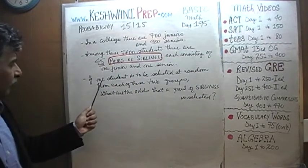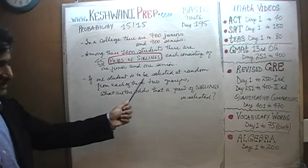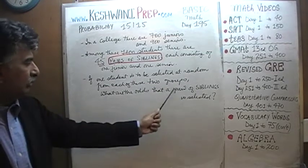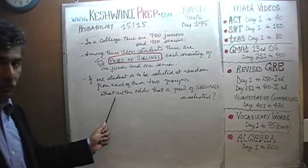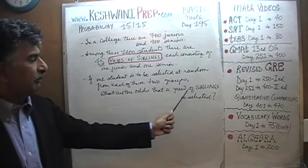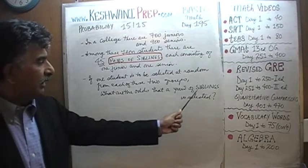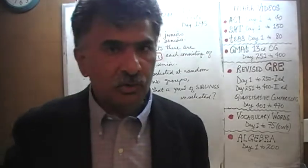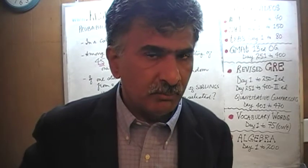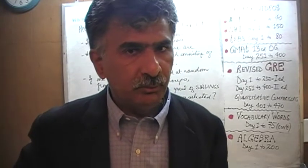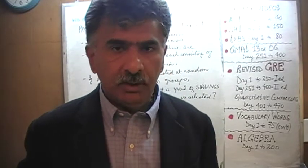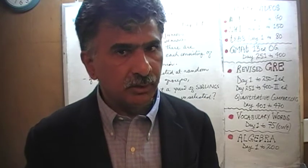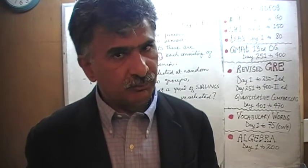The question is: if one student is to be selected at random from each of these two groups, what are the odds that we will end up selecting a pair of siblings? I'll give you five seconds to pause the video, do it yourself, and then compare your work against what we will do together.